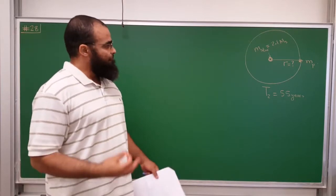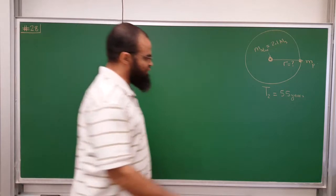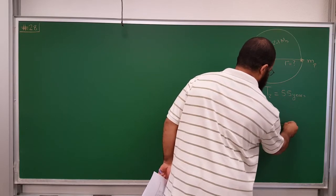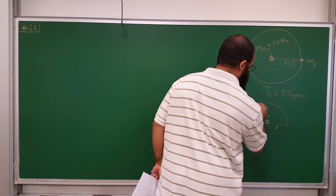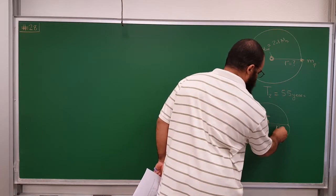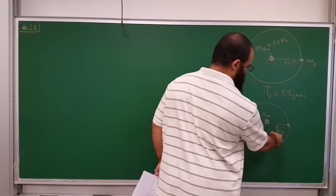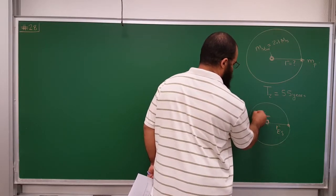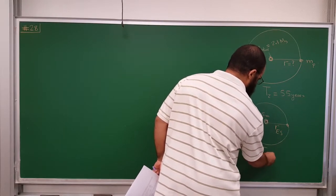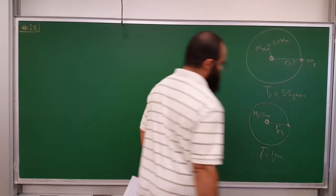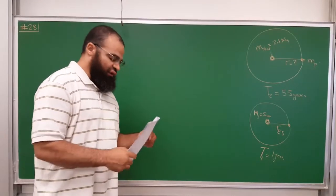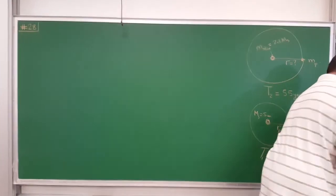To find this, we can compare it to Earth orbiting the sun. Here is the sun, and here is Earth — the distance from Earth to the sun is nearly circular, radius R_Earth. We know the mass of the sun, M_S, and the period T1 is equal to one year. There is a relationship between the period and the radius — so let me do some work on the whiteboard.